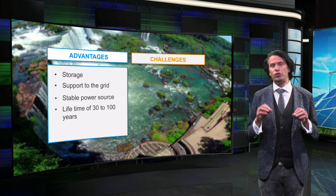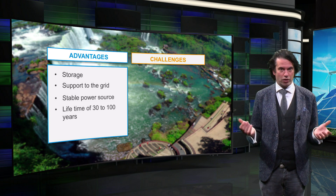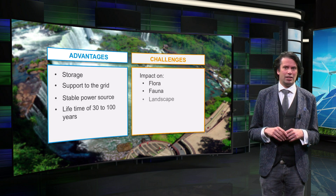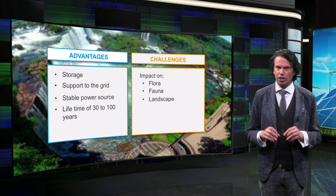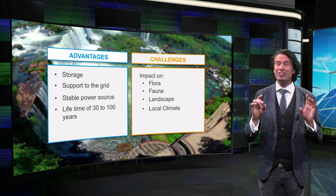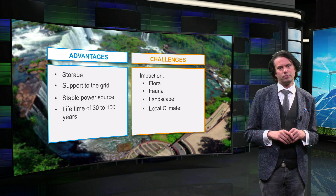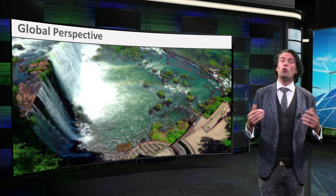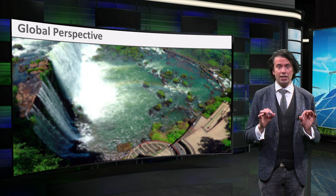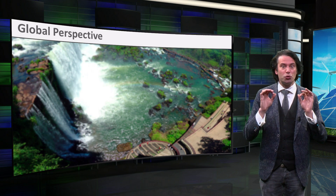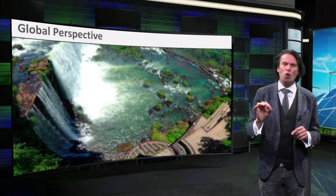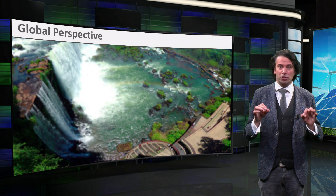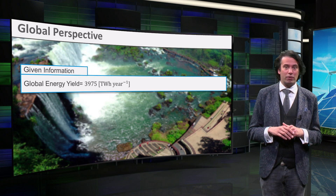However, hydropower doesn't work without a very large water reservoir. Such a reservoir has a huge impact on the local flora, fauna, and landscape. In the case of really large hydroelectricity projects, the local climate could even change due to changes in the water cycle. As a result of the impact on the surroundings of the dam, the global potential for new hydropower is relatively limited. Nevertheless, it is still the biggest contributor to renewable electricity, with a global installed capacity of 1,211 GW, producing approximately 3,975 TWh of electricity.